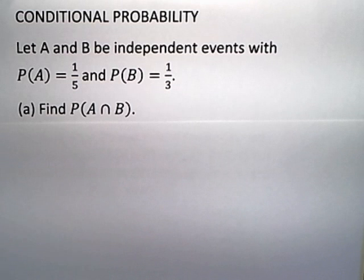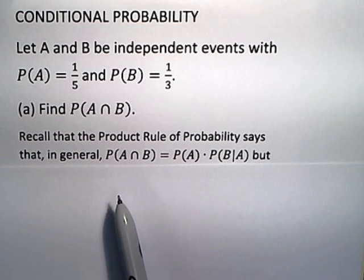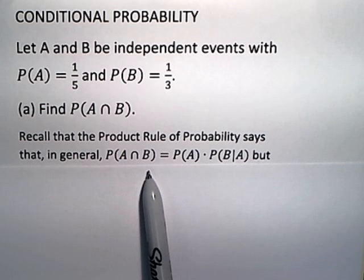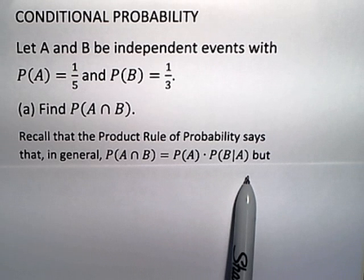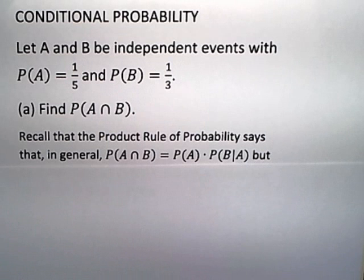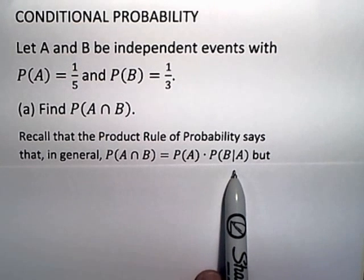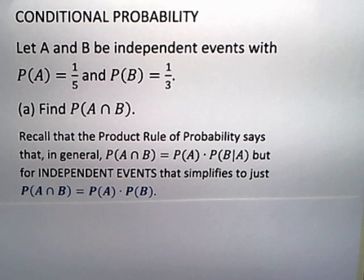In order to do that, we have to remember the product rule of probability. The product rule says the probability of A intersect B is the probability of A times the probability of B given A. However, it says here they're independent events. This rule simplifies if you know that the events are independent — the probability of B given A is just the probability of B for independent events.